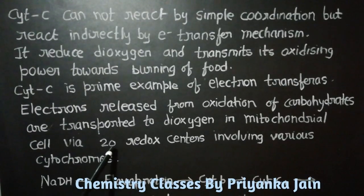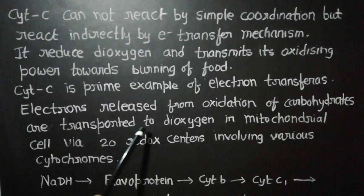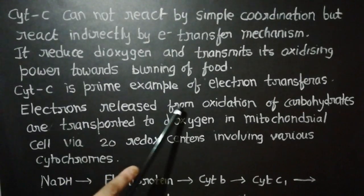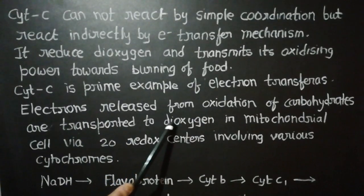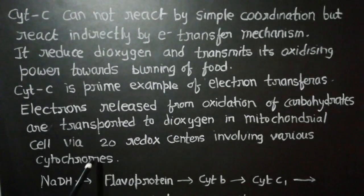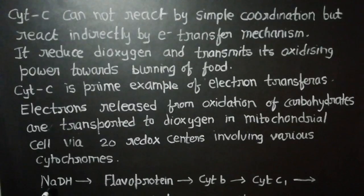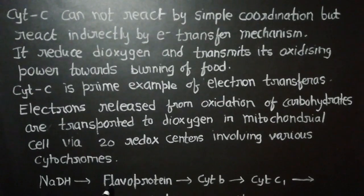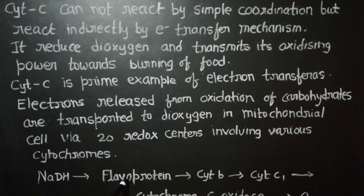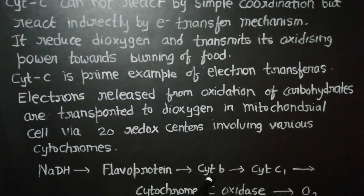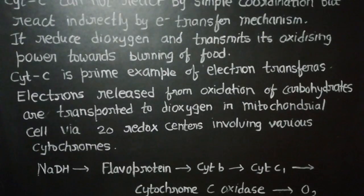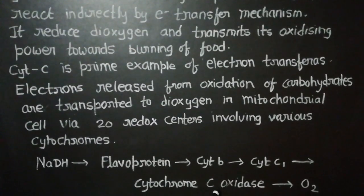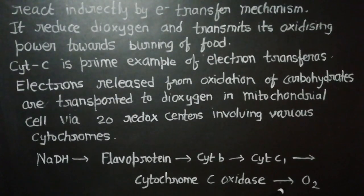These cytochromes are involved in the 20 redox centers present in the mitochondrial cell, transporting electrons released by oxidation of carbohydrates to dioxygen. The sequence proceeds as follows: NADH transmits its reducing power to the flavoprotein, then it is transferred to cytochrome b, then to cytochrome c1, then to cytochrome c oxidase, and finally the reducing power is transferred to dioxygen.